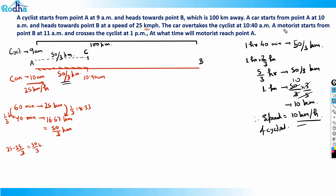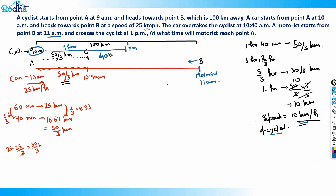Speed of cyclist is 10 km/h. Now a motorist starts from point B at 11 am and crosses the cyclist at 1 pm. The cyclist started at 9 am, so from 9 am to 1 pm is four hours. In four hours at 10 km/h, the cyclist will have moved 40 kilometers.